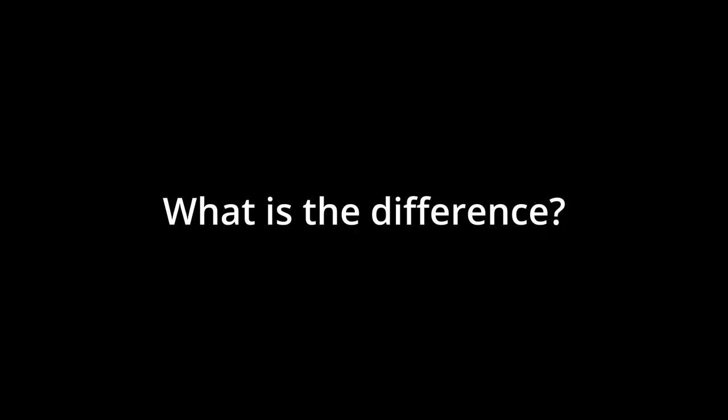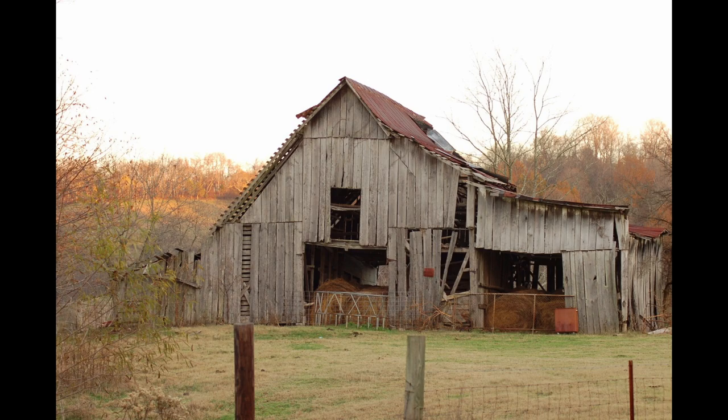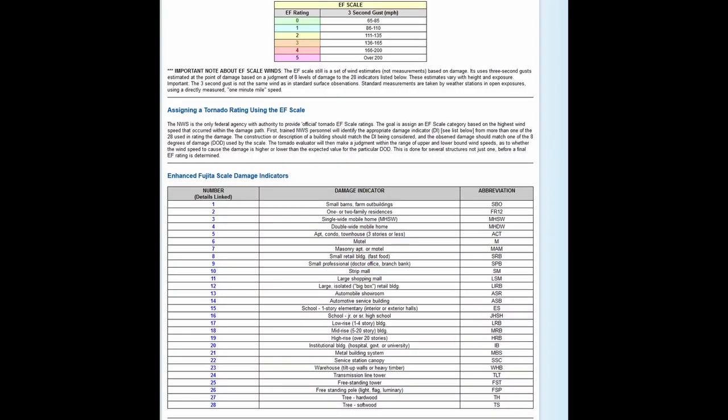The Fujita Scale was created and used from 1971 up until 2007. The Fujita Scale was based on damage but wasn't as consistent, since it did not take into consideration what type of structures were being damaged. For example, any tornado could knock down a really old barn, making the damage rating inconsistent — which led to the creation of a new scale.